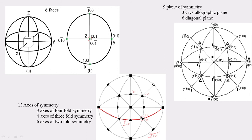First axis of 2-fold symmetry, second axis of 2-fold symmetry, third, fourth, fifth, and sixth axis of 2-fold symmetry. This is how the fold symmetry is represented.